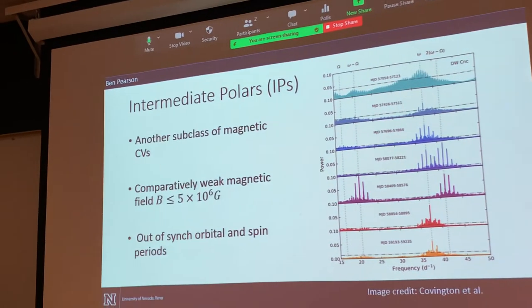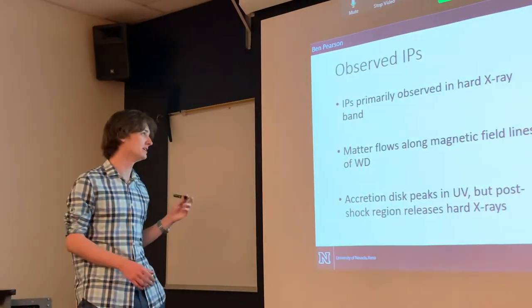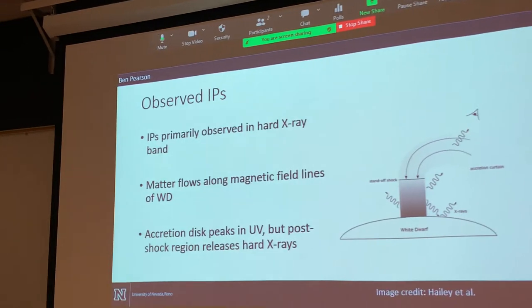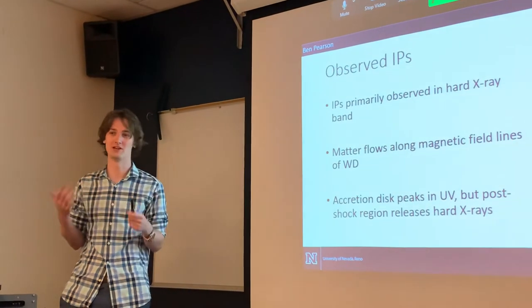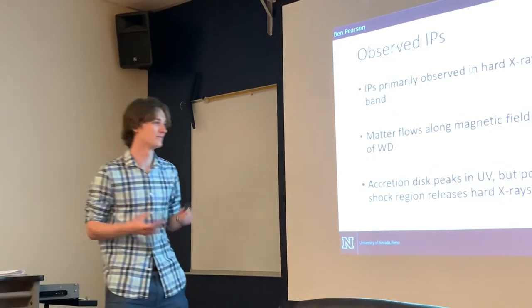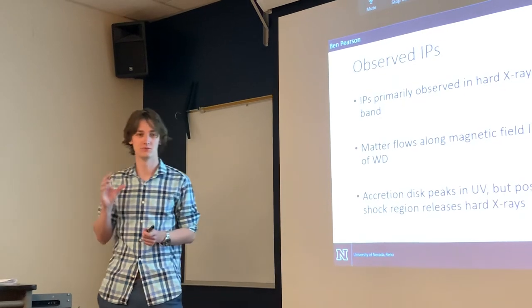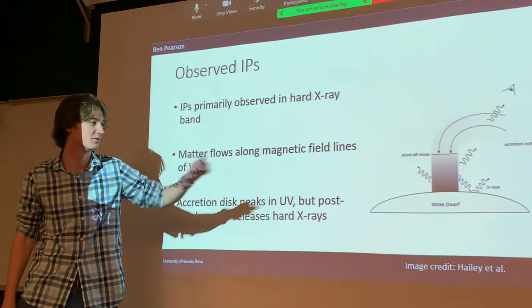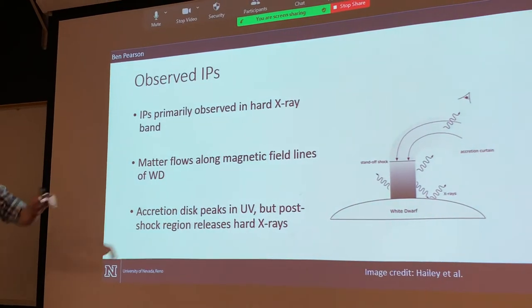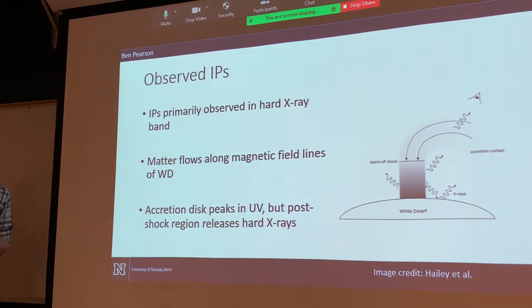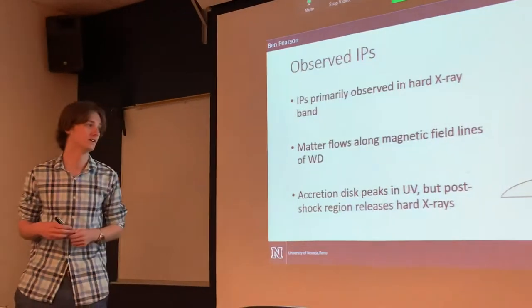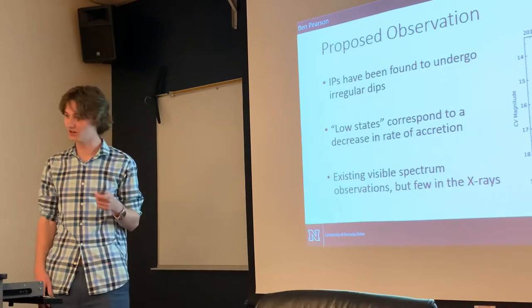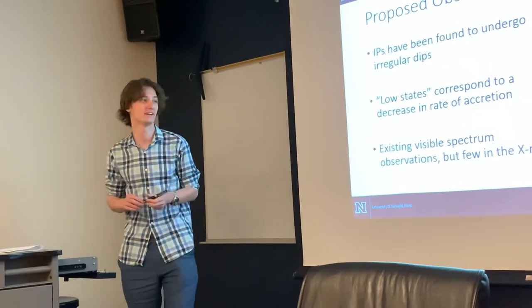When we observe intermediate polars, they primarily show themselves in a hard x-ray band around 20 kiloelectron volts, despite white dwarfs emitting mostly UV. When the accreted material reaches the closer radii, it heats up and gets channeled onto the white dwarf poles, forming what's called a post-shock region. This region is responsible for releasing most of the x-rays from the system.